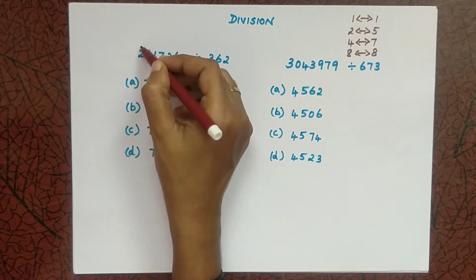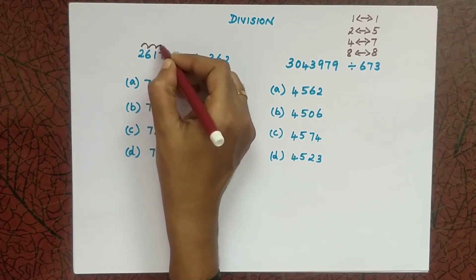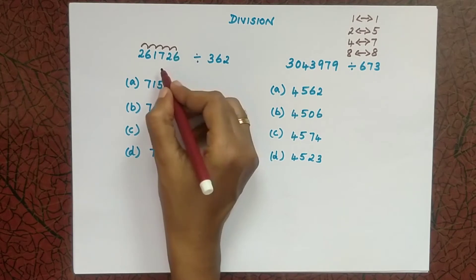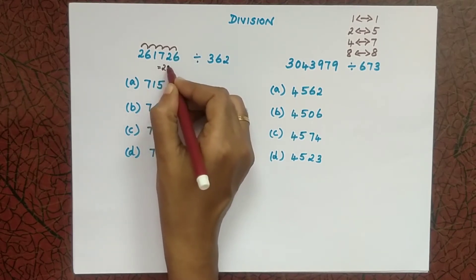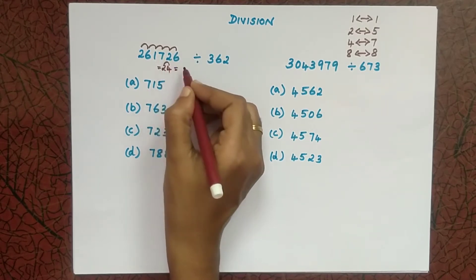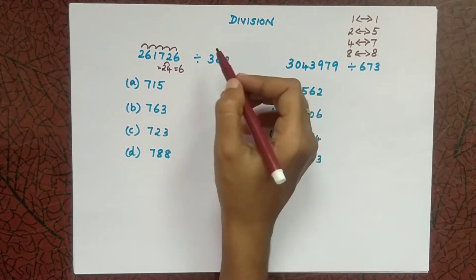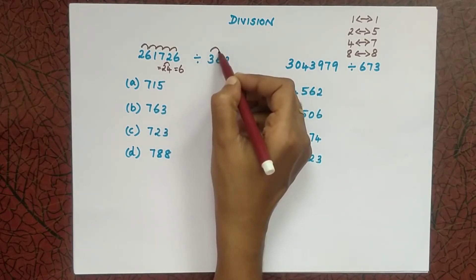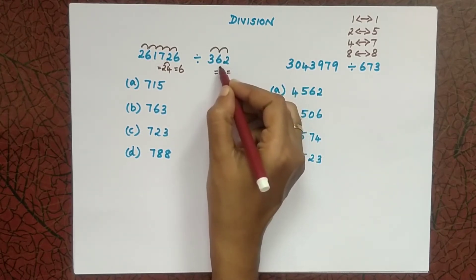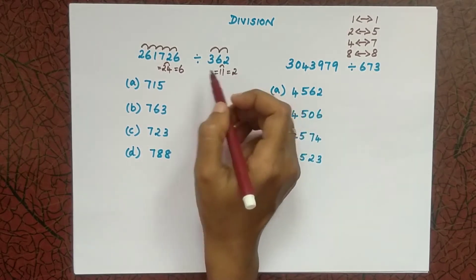For that, we have to add all the digits individually: 2 plus 6 is 8, 8 plus 1 is 9, 9 plus 7 is 16, 16 plus 2 is 18, 18 plus 6 is 24. So here our sum is 24. We simplify to a single digit: 2 plus 4 is 6. Now on the divisor side, same technique: 3 plus 6 is 9, 9 plus 2 is 11, and 1 plus 1 is 2.